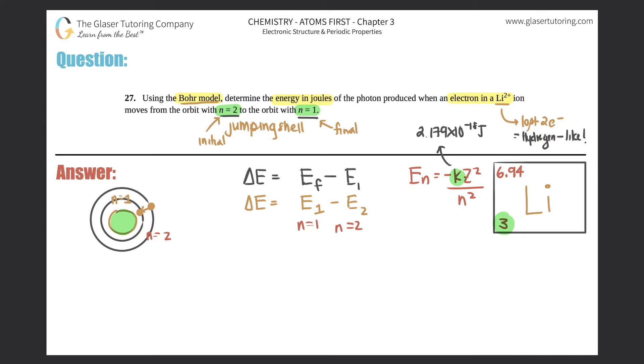So now the equation that's coming up is E to the n equals negative k z squared over n squared. And if you thought of this formula, you are absolutely right. k is that constant number, the Rydberg constant, which is always 2.179 times 10 to the negative 18th joules.